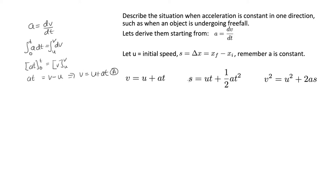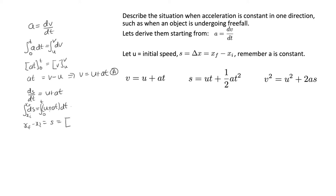To get an expression for displacement s, we write v = ds/dt = u + at, multiply through by dt, and integrate from t = 0 to t. This gives s = ut + ½at². This is the second kinematic equation.